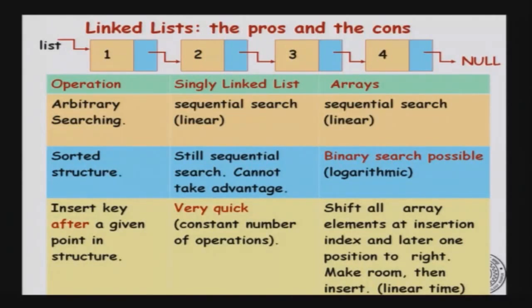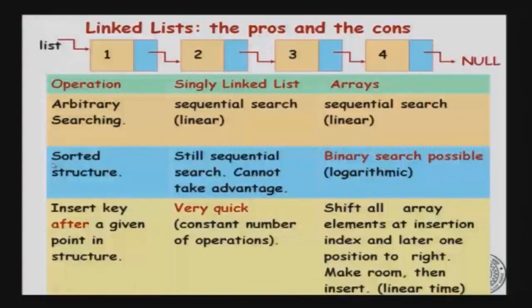To recap: searching in a linked list takes O(n) time in the worst case, which is the same as in an array. However, if you sort an array you can use binary search, whereas in a linked list even if sorted there is no way to do binary search, because you cannot reach the middle element in one step. In an array you can compute mid = (0 + n-1) / 2 and jump directly there, but in a linked list you must traverse one node at a time. Sorting does not help for searching in a singly linked list, but insertion and deletion are very quick in a linked list, whereas they are very slow in an array.